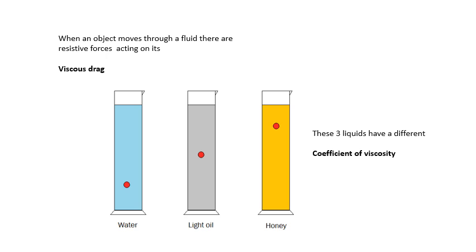We talk about the property of a fluid called the coefficient of viscosity. The bigger it is, the more friction forces there will be at a particular velocity. Honey is a very viscous fluid; water is much less viscous.